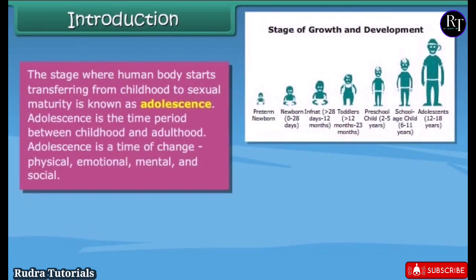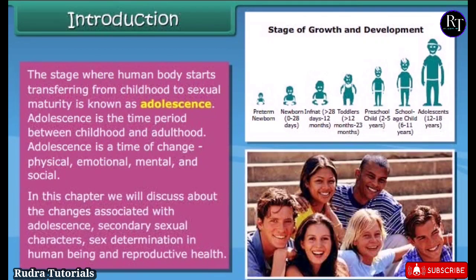The stage where the human body starts transferring from childhood to sexual maturity is known as adolescence. Adolescence is the time period between childhood and adulthood — a time of change: physical, emotional, mental, and social. In this chapter we will discuss the changes associated with adolescence, secondary sexual characters, sex determination in human beings, and reproductive health.